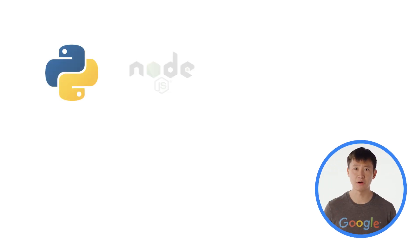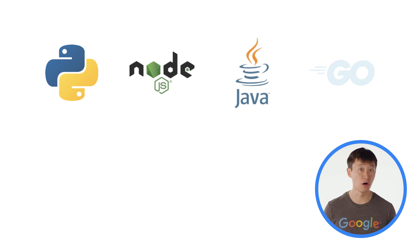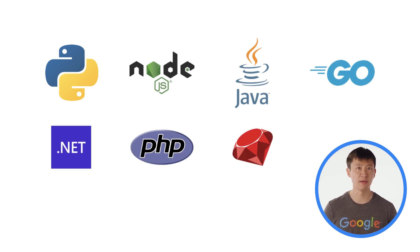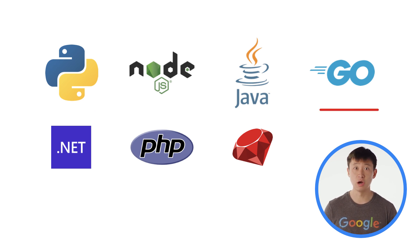As a developer, you can call all of these machine learning APIs from your code using client libraries in programming languages like Python, Node.js, Java, Go, C#, PHP, and Ruby. The machine learning APIs are easy to use since Google handles data collection, model training, and maintenance.